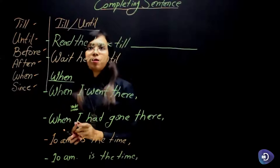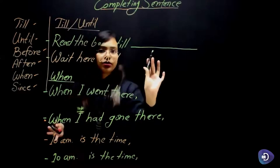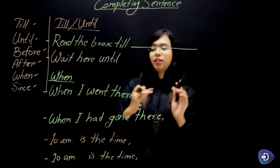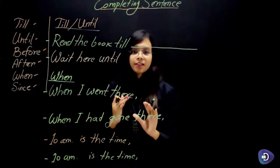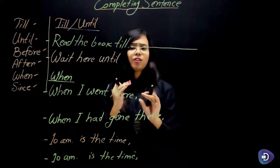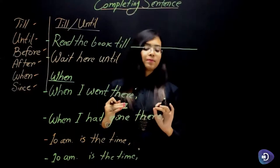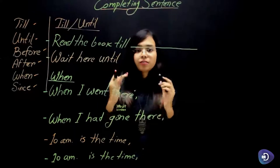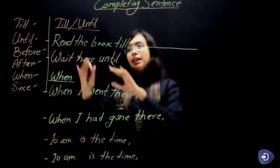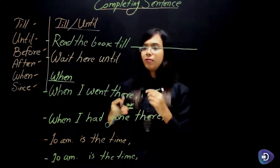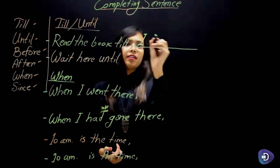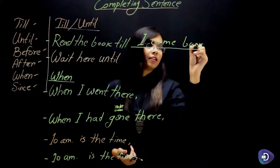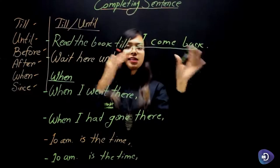Till and until are very important. For example: read the book till I come back. This is what completing sentences look like — you have to know the short key rules. Read the book till I come back.